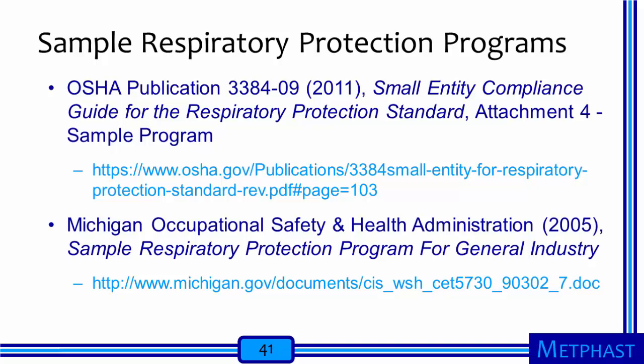Sometimes workers may choose to wear respirators for their own peace of mind even when not required to. Even if respirators are not required, the organization must provide some training if it gives workers the option to wear respirators. It can be daunting to write a Respiratory Protection Program from scratch, but OSHA has a publication—Small Entity Compliance Guide for the Respiratory Protection Standard—with an example program that can be a starting point for organizations. Another useful resource is from the Michigan Occupational Safety and Health Administration, which has a sample program for general industry.